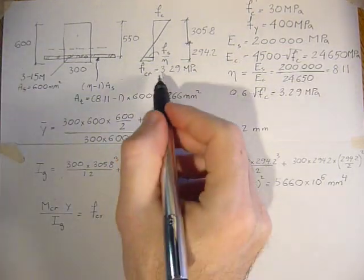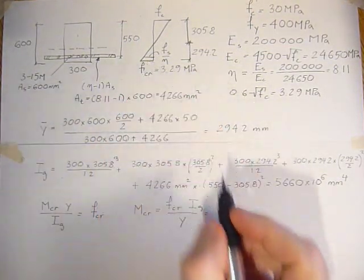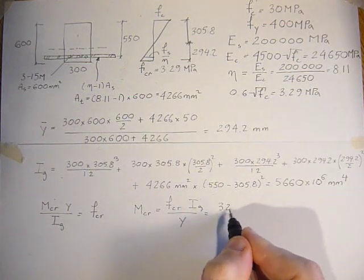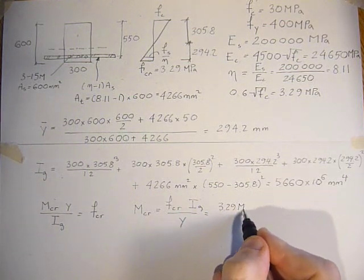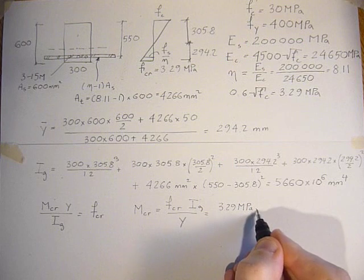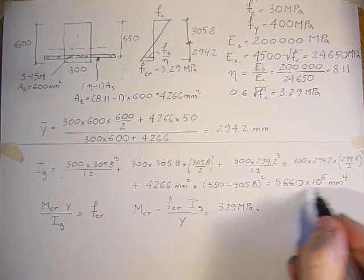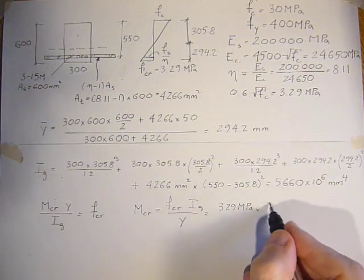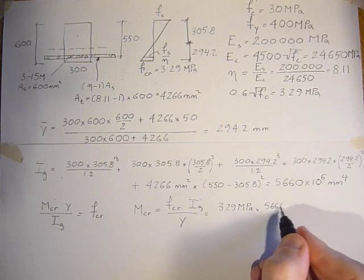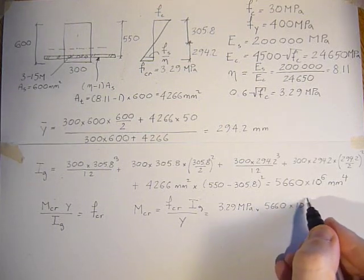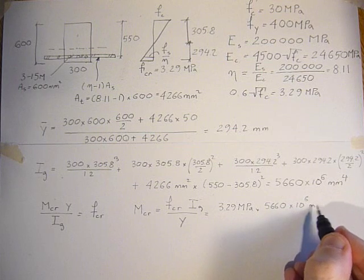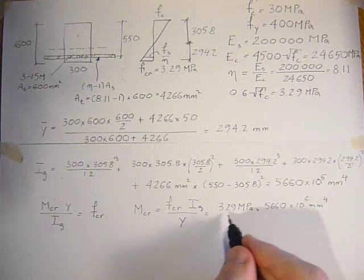The cracking stress is 3.29 MPa. The gross inertia is 5,660 times 10 to the sixth millimeters to the fourth, over Y.